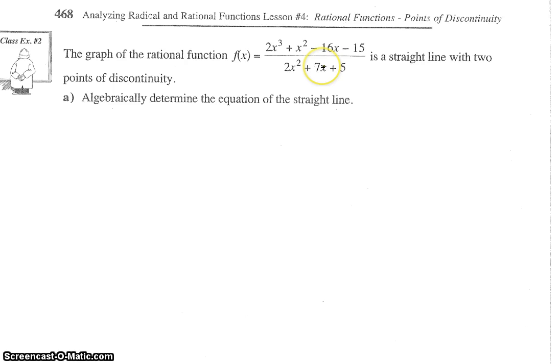Well, x cubed divided by x squared is basically just x. So that's why they're saying it's a straight line if we were to divide that. So the graph would appear to be a linear function with two points of discontinuity happening from the denominator, I'm assuming. Now, the only way that could happen is if those same two factors in the denominator are also in the numerator.